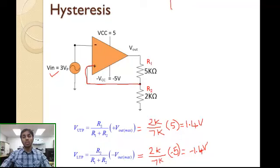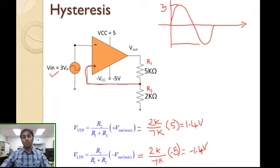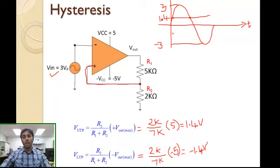Now let's look at how the output signal will appear. The input signal is a 3-volt peak signal — positive 3 volts to negative 3 volts — plotted with respect to time. The upper threshold point (UTP) is located at 1.4 volts, and the lower threshold point (LTP) is at -1.4 volts. The UTP and LTP have the same magnitude but opposite polarity.